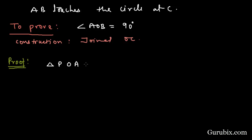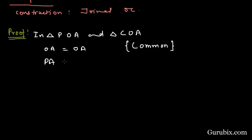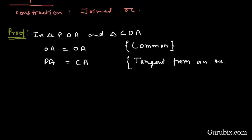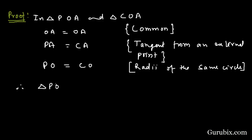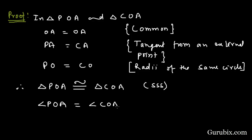We shall consider triangle POA and triangle COA. Here, OA is equal to OA, which is common. PA is equal to CA — tangents from an external point. PO is equal to CO — radii of the same circle. Therefore, triangle POA is congruent to triangle COA by the SSS (Side-Side-Side) congruency rule. Therefore, angle POA equals angle COA by CPCT (corresponding parts of congruent triangles). Let this be equation number one.